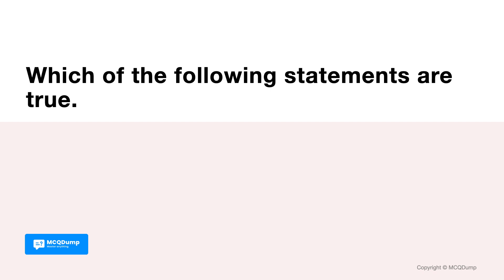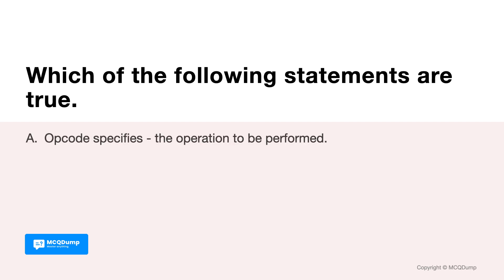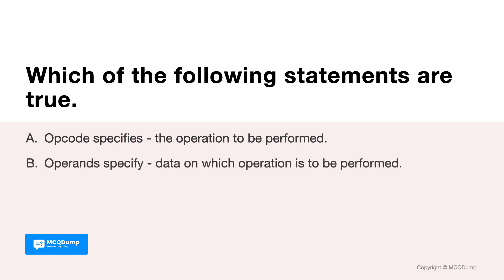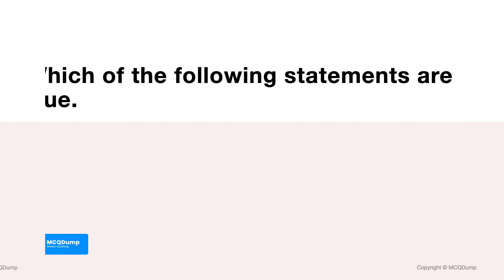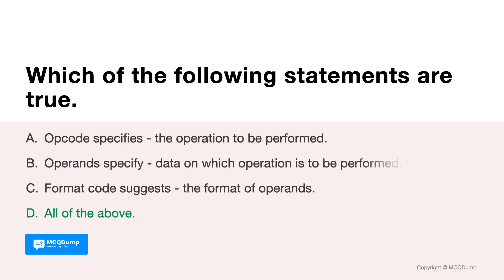Which of the following statements are true? Options are: A. Opcode specifies the operation to be performed. B. Operands specify data on which operation is to be performed. C. Format code suggests the format of operands. And D. All of the above. Answer is D. All of the above.